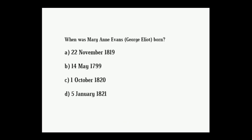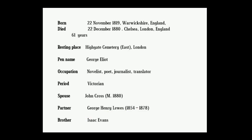Next question: when was Mary Ann Evans born? Options: 22 November 1819, 14th May 1799, 1st October 1820, 5th January 1821. Correct answer: 22 November 1819. Some information regarding George Eliot: born 22 November 1819, Warwickshire; died 22 December 1880, Chelsea, London, at the age of 61 years. Resting place: Highgate Cemetery. Pen name: George Eliot.